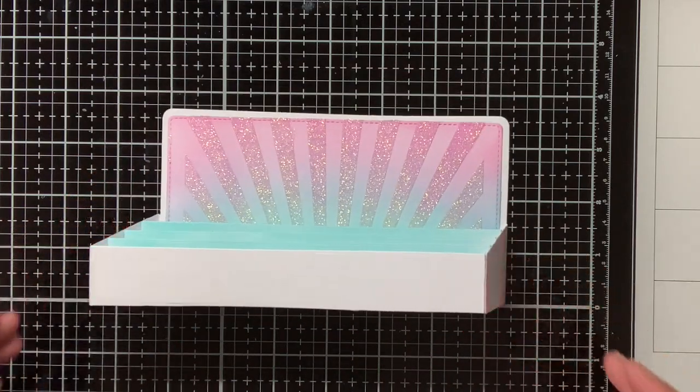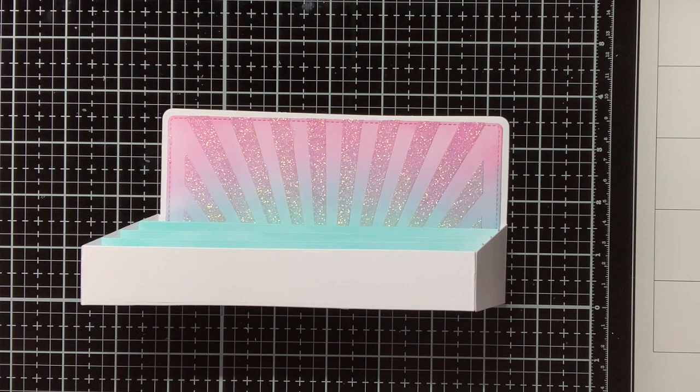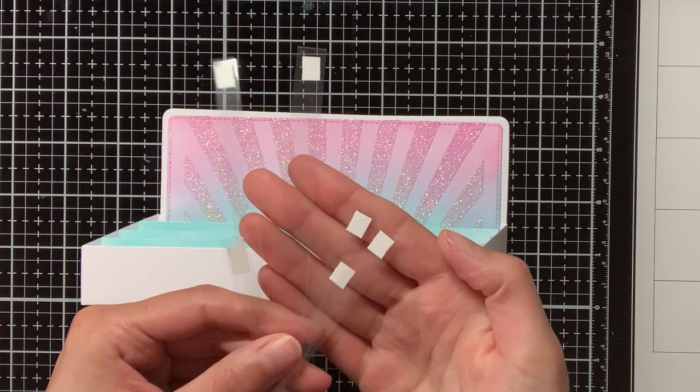And then here you have the assembled box. You also have some decorative pieces for the front and also the side of the box, but I will adhere those later on.